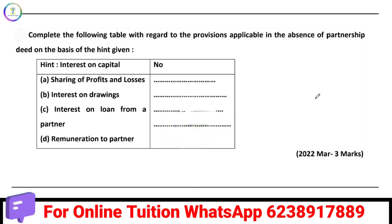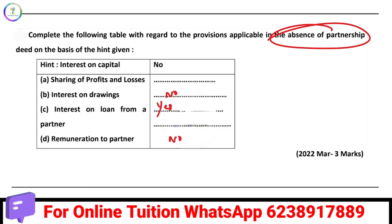Complete the following terms with regards to provisions applicable in the absence of a partnership deed. If the partnership deed is silent: interest on capital is nil, remuneration to partners is nil, interest on drawings is nil. Interest on loan is 6% per annum. Sharing of profits and losses is equally shared.